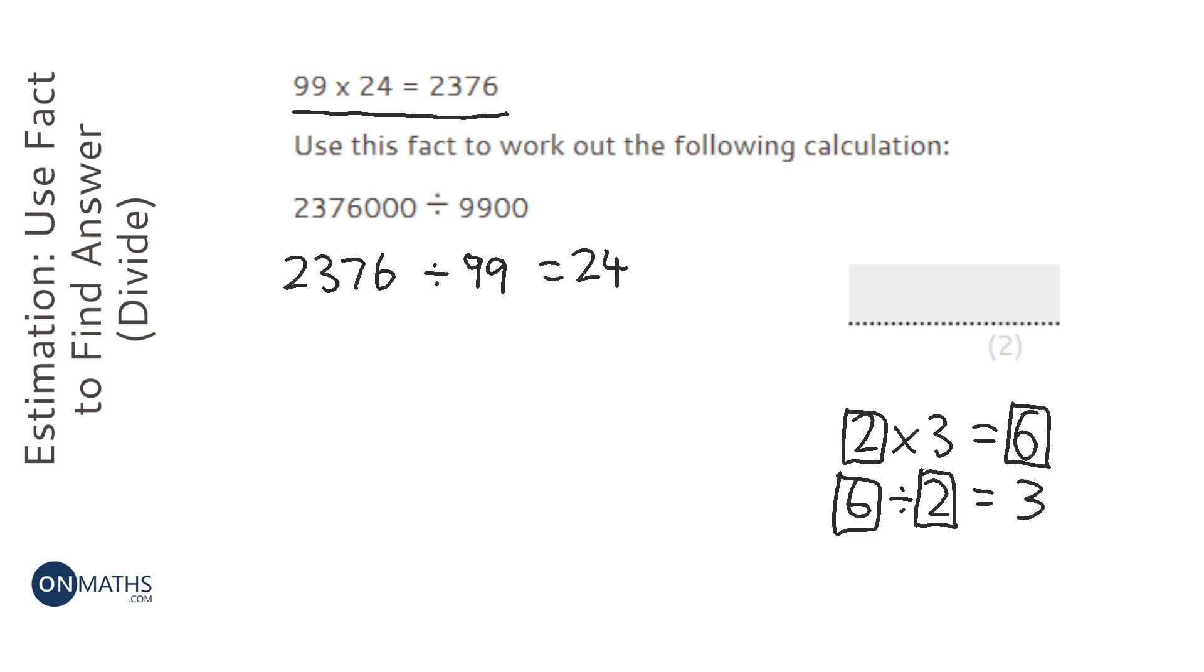Now we've got to think about what we're doing in the actual question that it's given us. Well, we've times the top by 1,000, and we've times the bottom by 100. Now, when we times the top by 1,000, it will make the answer 1,000 times bigger. But when you're dividing, it's basically the same as a fraction.